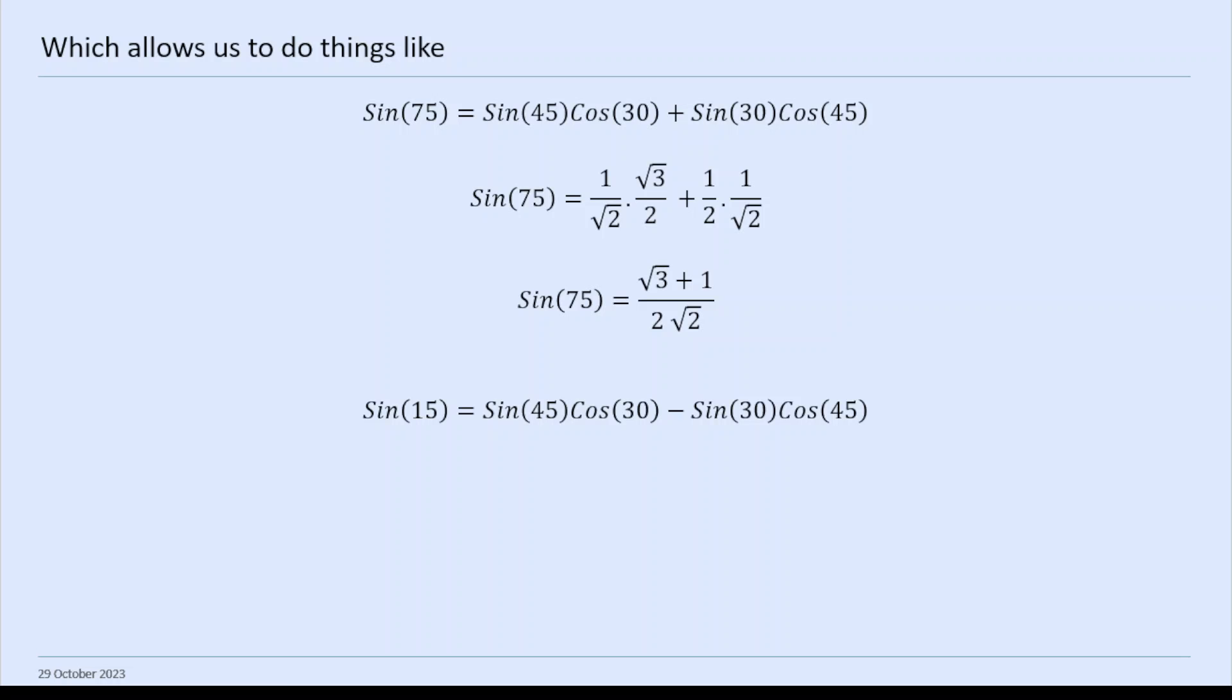You can also look at sine 15. So sine 15 is sine 45 cos 30 minus sine 30 cos 45, which when we calculate it through, is root 3 minus 1 over 2 root 2.